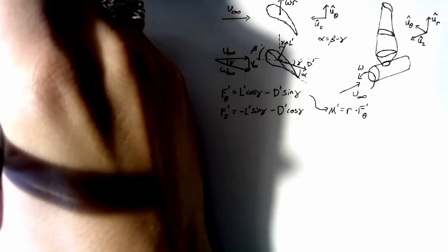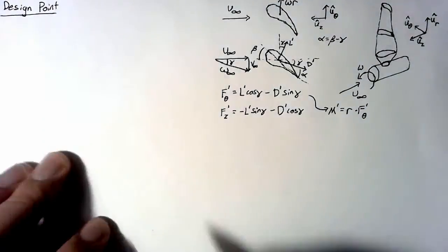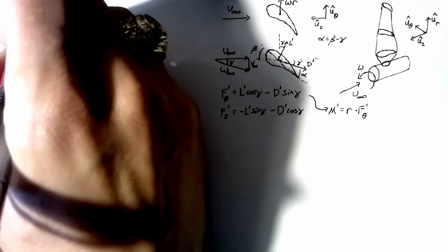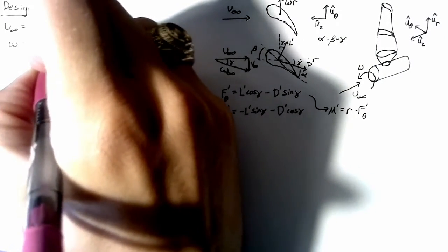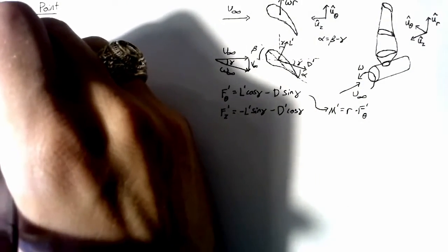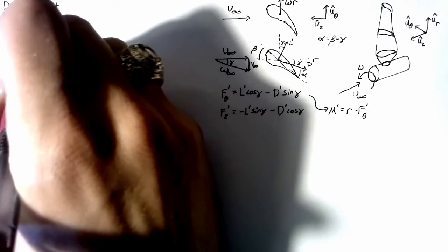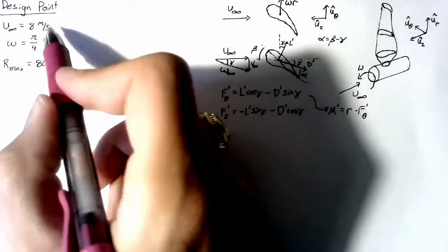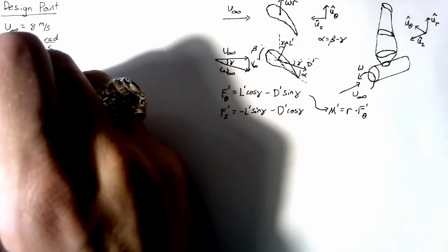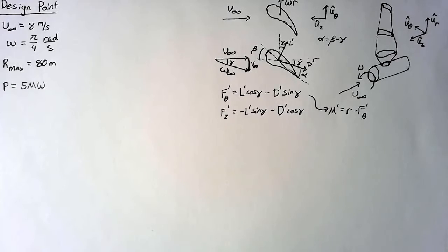Alright, we're basically at a point where we can start thinking about analyzing the entire wing. So let's choose a design point. We need to choose some oncoming velocity. I'm going to say that this is 8 meters per second. We need to choose an omega, and this is going to be pi over 4 radians per second. We also need to choose a size of our wind turbine. So I'm going to say that the maximum radius is going to be 80 meters. So this thing is massive, it's turning slowly, and it only has a little bit of wind to get power from. I'm going to say that our target power is going to be 5 megawatts. Not saying we're going to get there this time, but this is what we're aiming for.